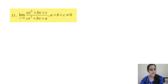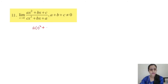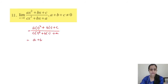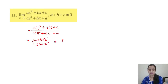Question 11: limit x tends to 1, (ax² + bx + c)/(cx² + bx + a). Substituting x = 1: numerator = a + b + c; denominator = c + b + a. Both are equal, so they cancel. The answer is 1.